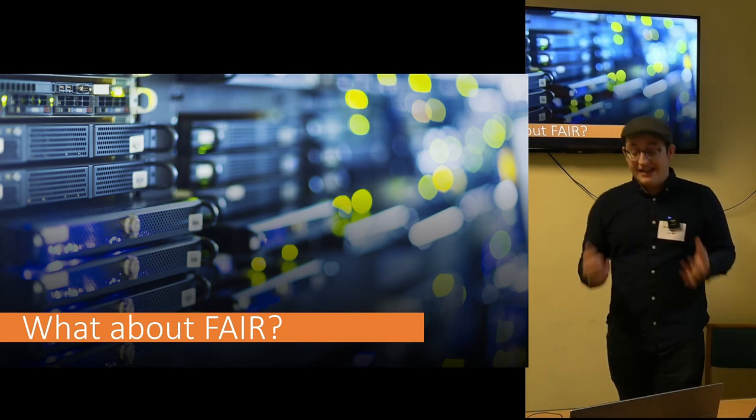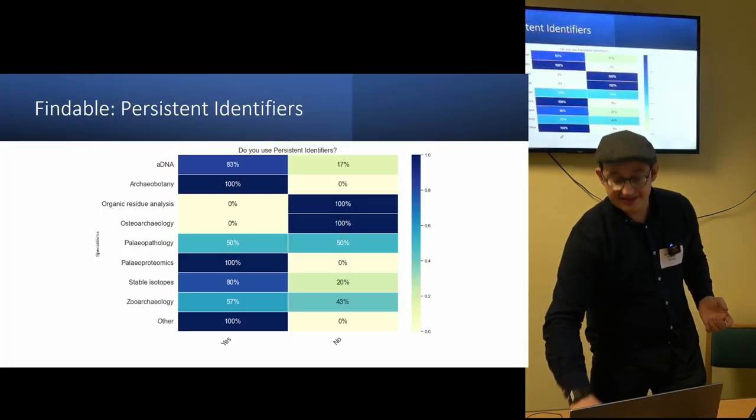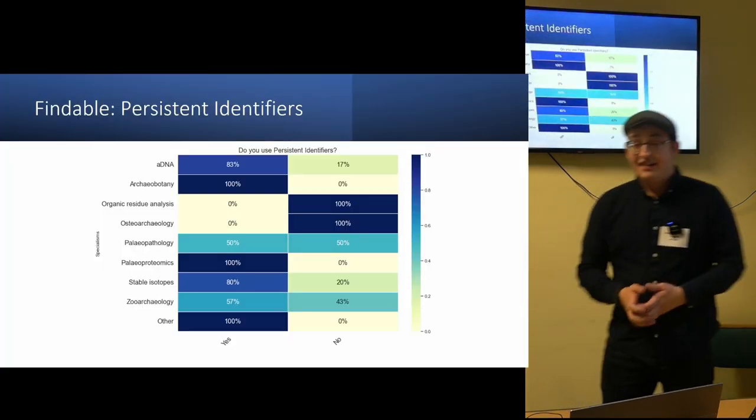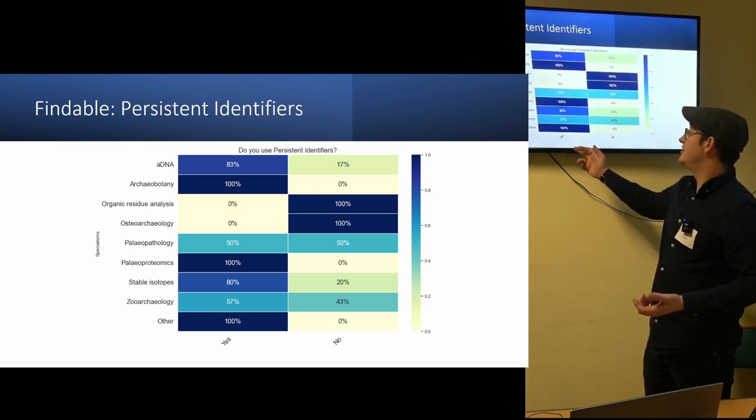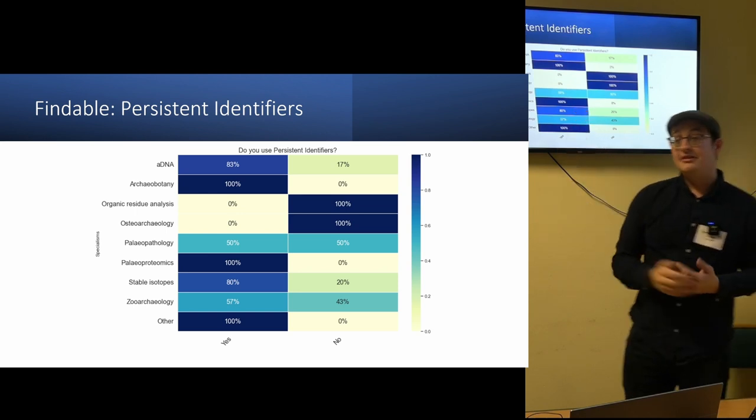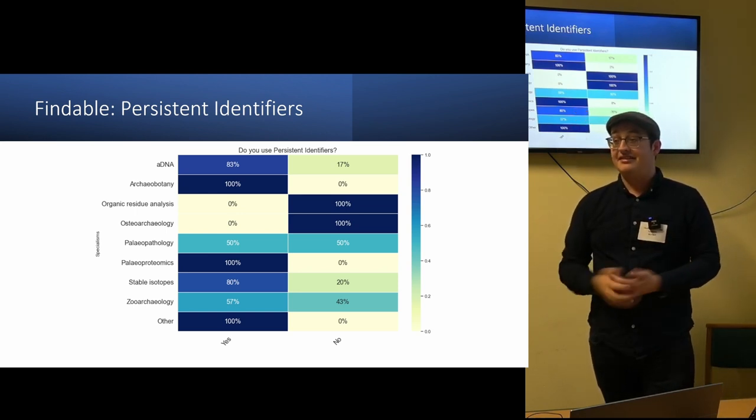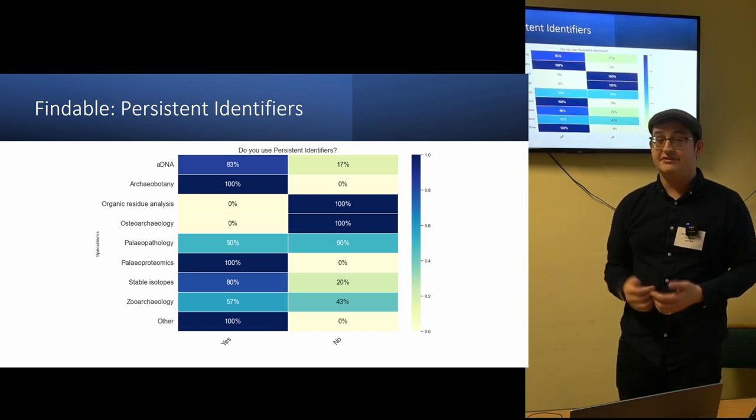So I'm here to talk to you about the FAIR data principles and how it relates to bioarchaeology. So let's actually dive into the results. In terms of findability, it's clear that quite a lot of people are using persistent identifiers, and especially if you look at archaeobotany or paleoproteomics, which means that the data can be findable. And using persistent identifiers is great because you will always relate to the individual results.